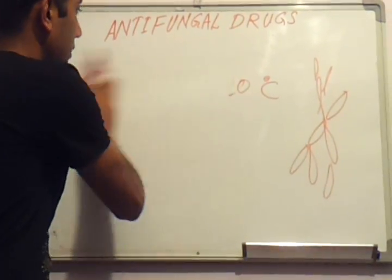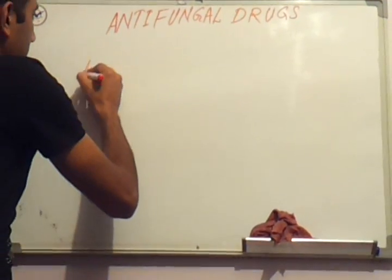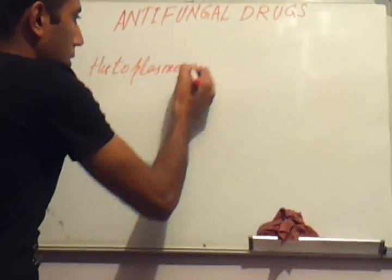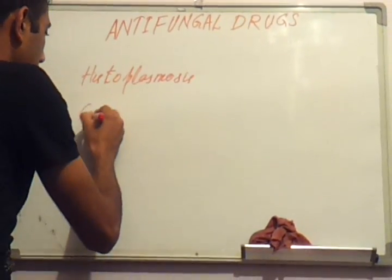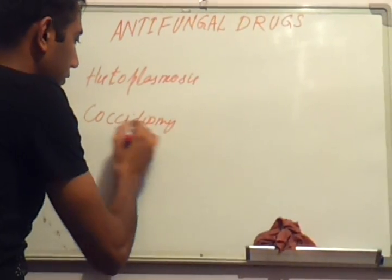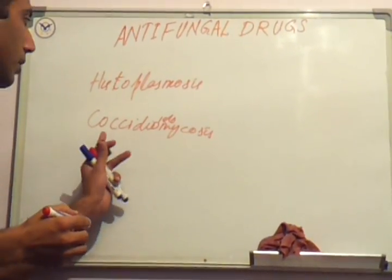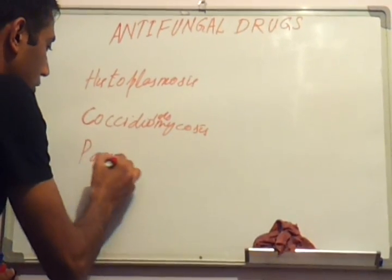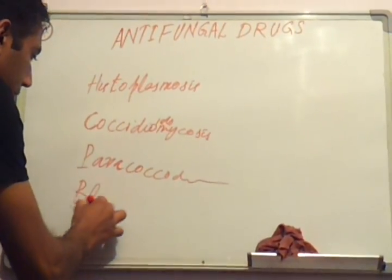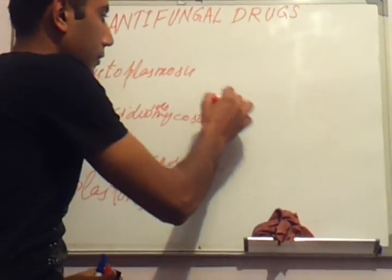Which types of fungi cause diseases in our body and how to treat them using antifungal drugs? First: histoplasmosis, caused by Histoplasma. Second: coccidioidomycosis. Third: blastomycosis. These fungi can cause pneumonia.